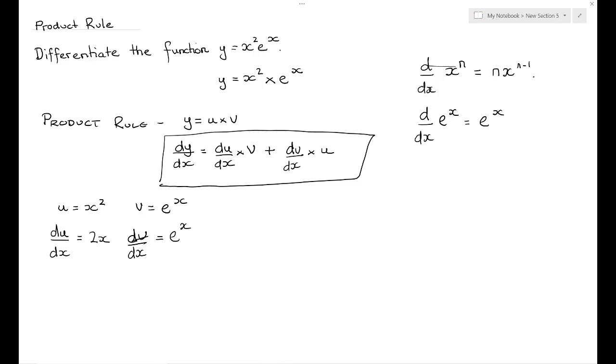So all we need to do now is substitute in our values of du/dx, our v, our dv/dx, and our u to find dy/dx. So dy/dx is equal to du/dx, which is 2x, multiply by v, which is e to the x. Then I add to that the derivative of v with respect to x, which is e to the x, multiply by u, which is x squared.